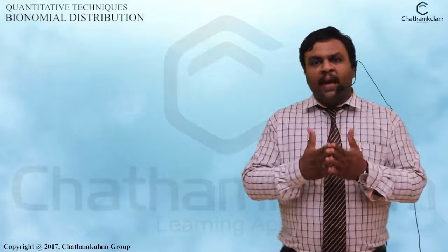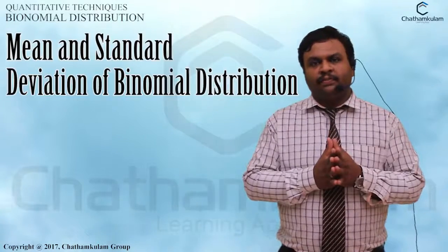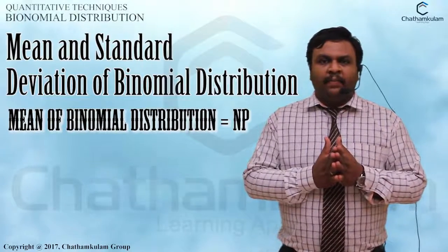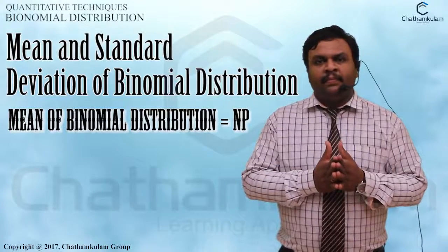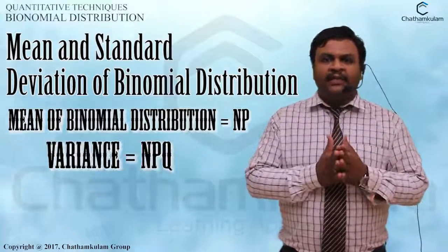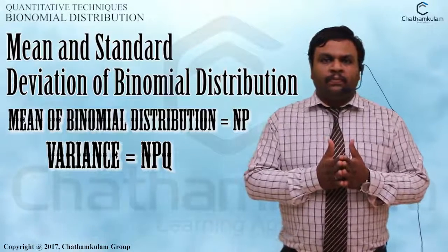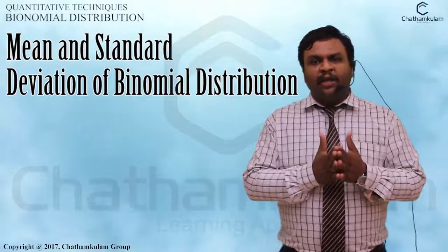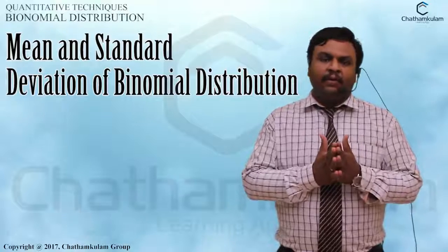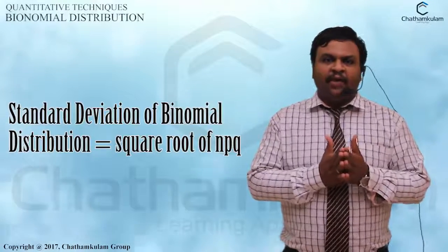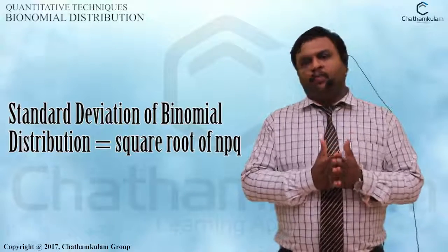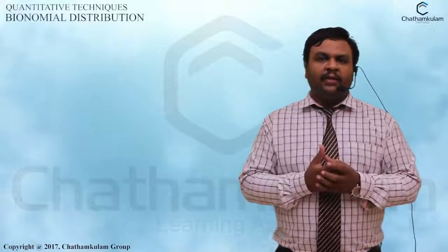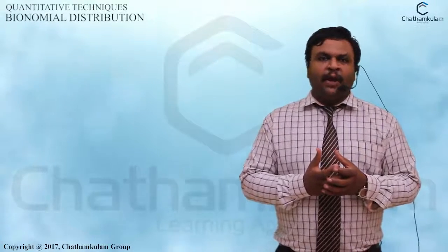Next, we discuss the mean and variance of binomial distribution. The mean of binomial distribution is np. The standard deviation of binomial distribution is equal to the square root of npq. These are the general ideas, concepts, and definitions about binomial distribution.